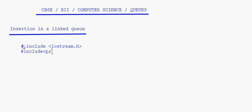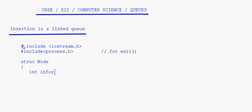We include the header files iostream.h and process.h. process.h is for the exit function. Then we define a structure called node with an integer field info and a node pointer field next.